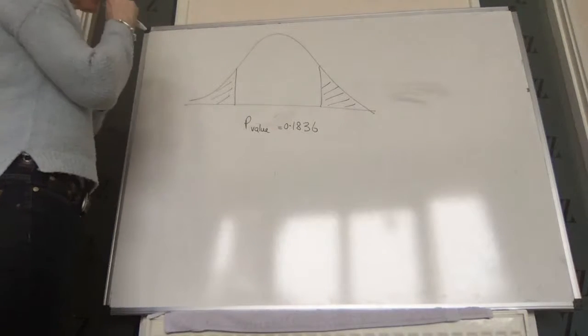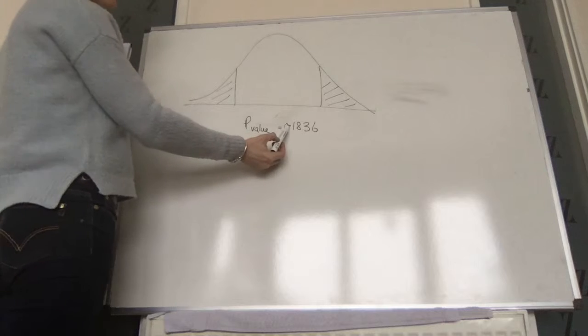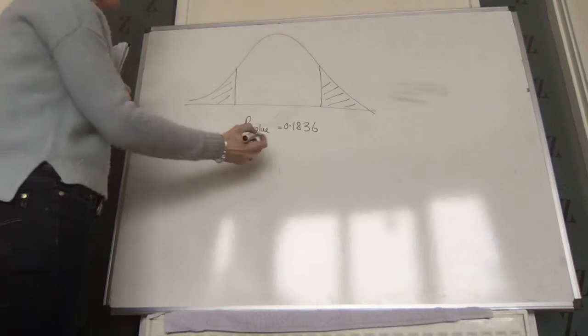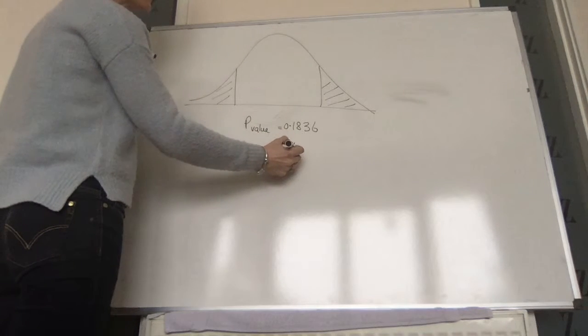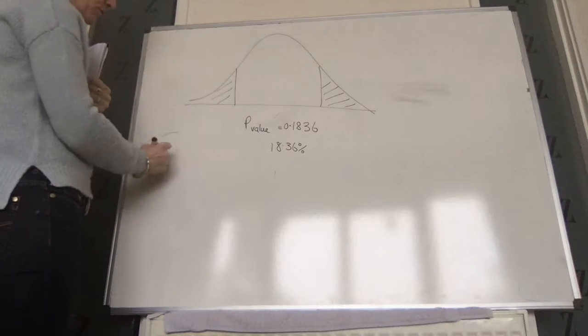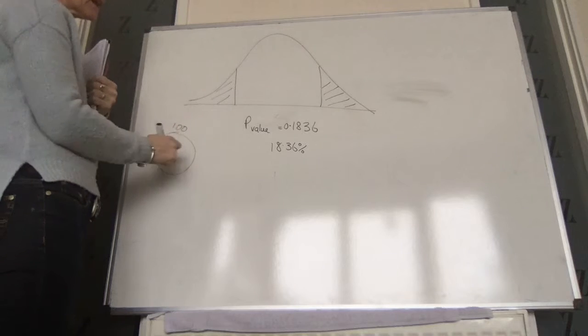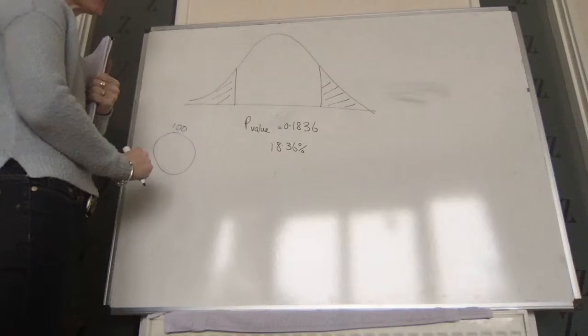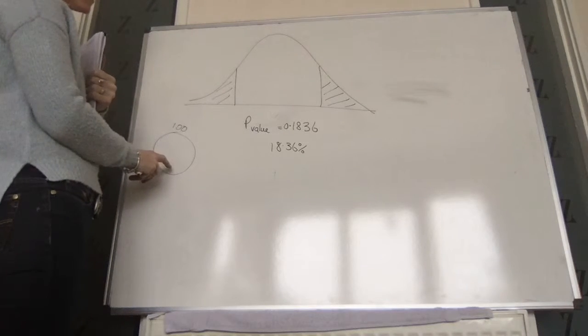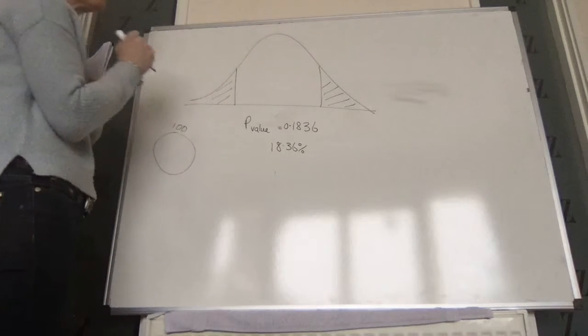Just to re-emphasize, if the p-value is 0.1836, that means 18.36 percent of our sample means - if we took all of the possible sample means of size 100 - 18.36 percent of them would have a value that lies in that interval.